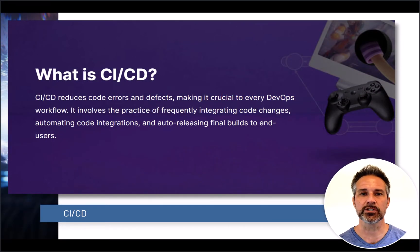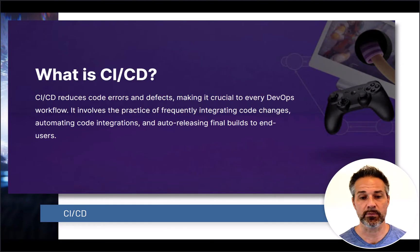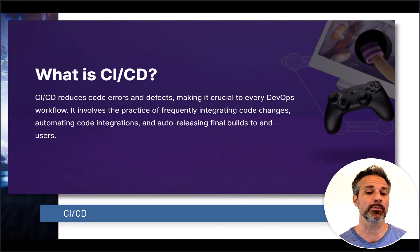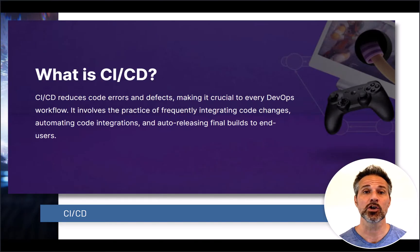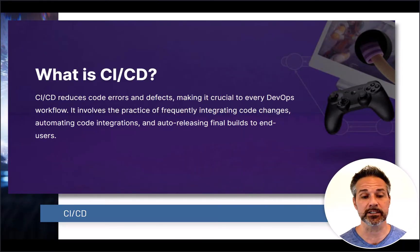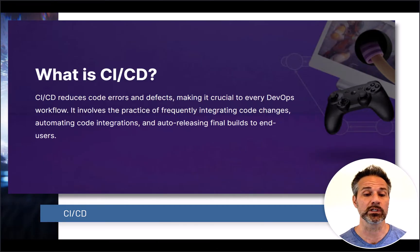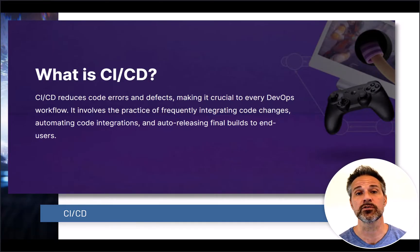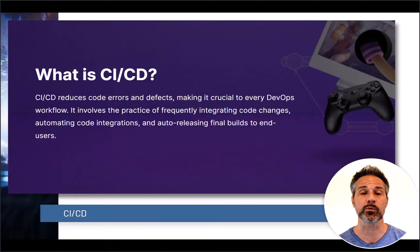So what is continuous integration and continuous deployment? CICD, as it's called, reduces code errors and defects, making it crucial to every DevOps workflow. The developer operations is typically the final stage or stages where your project is being tested, going live, and having new updates added to the live experience. CICD involves practices of frequently integrating your code changes, automatically integrating that code, and then releasing builds to your end users. You can do the full CICD process together, or focus on one part of the workflow.